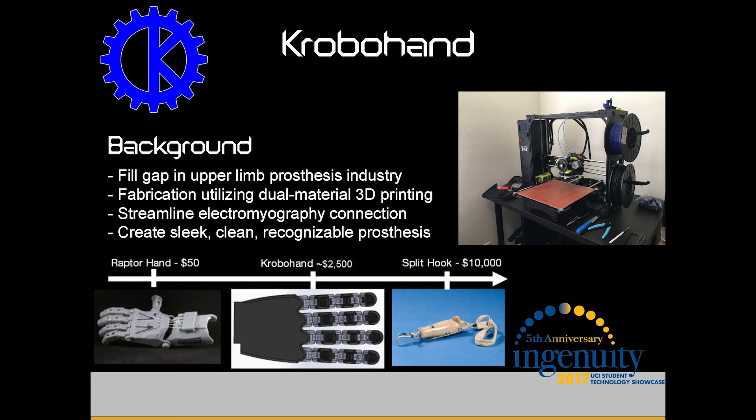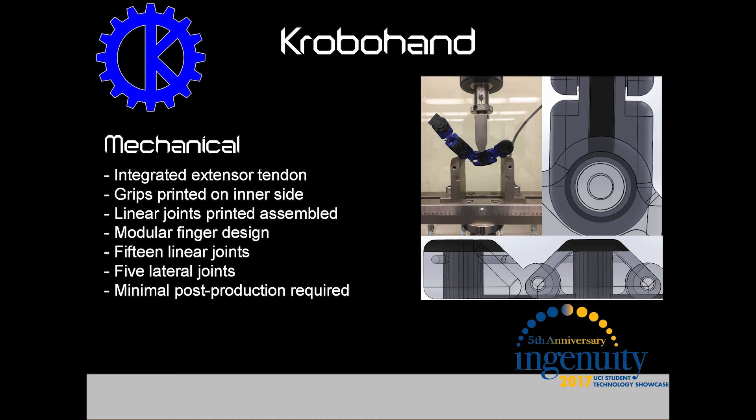The CroboHand consists of a rigid material and a flexible material. We will be streamlining electromyography between amputee and device, creating a sleek, clean, and recognizable prosthesis. Each digit has an integrated 3D-printed extensor tendon allowing the finger to open naturally to a resting position. Grips are printed from the same flexible material due to their high coefficient of friction. Every linear joint is printed pre-assembled, and every digit is modular at the lateral joint — so if an amputee accidentally breaks off a finger, they can easily replace it instead of buying an entirely new device. Overall, the CroboHand has very minimal post-production required.